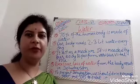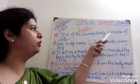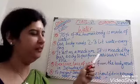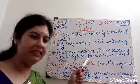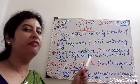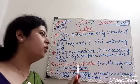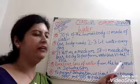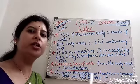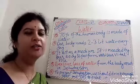The seventh important component is water. Seventy percent of the human body is made of water. Our body needs two to three liters of water every day. Water acts as a medium and is needed by our body to perform various vital roles. Excessive loss of water from the body results in dehydration. To prevent dehydration, we should drink enough water, and ORS can be used to treat it.